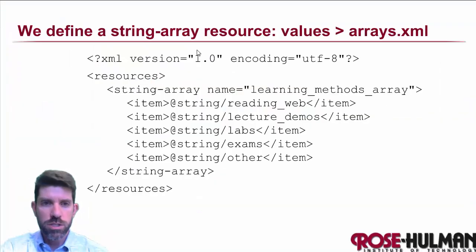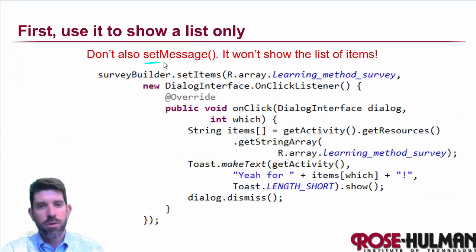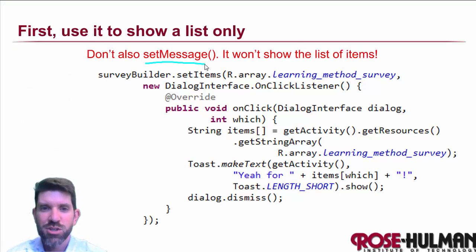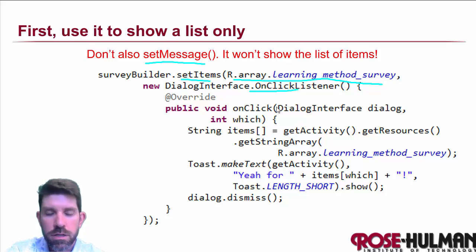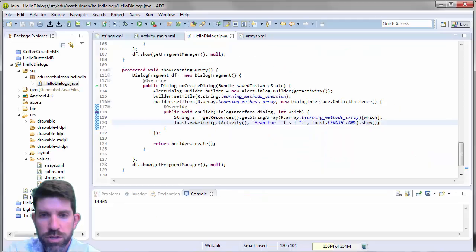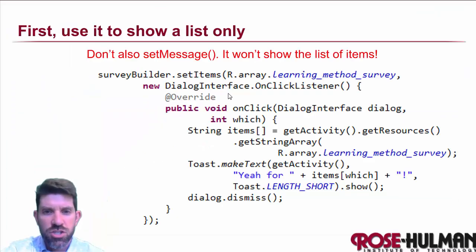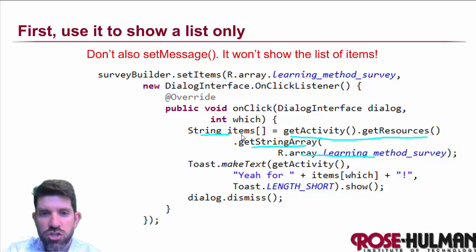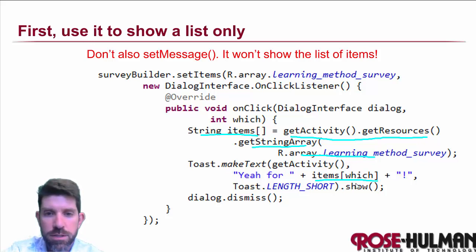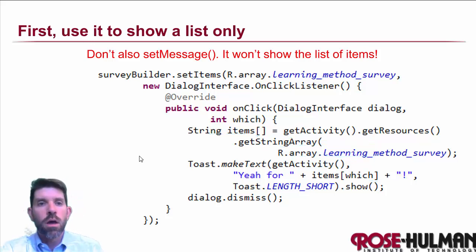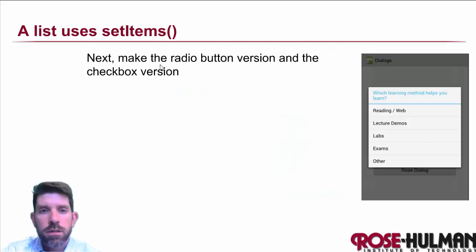A reminder: do not use setMessage and setItems together — it won't work. You could also refactor the code slightly: since we reference the string array twice, you can extract it by calling getActivity().getResources().getStringArray() once and reuse that variable for both the setItems call and the listener.